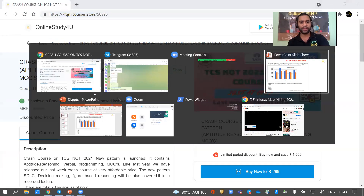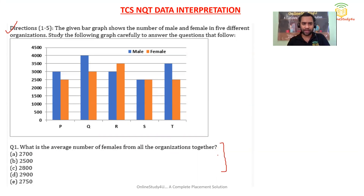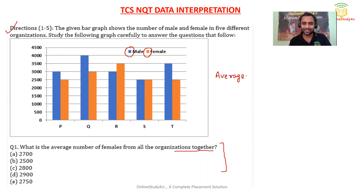Let's start with Question 1: What is the average number of females from all the organizations together? Data interpretation is not a very different topic — if you know percentage, ratio, and average, that's all you need for data interpretation. We are basically going to interpret the data given. Male is shown in blue color and female is in orange.